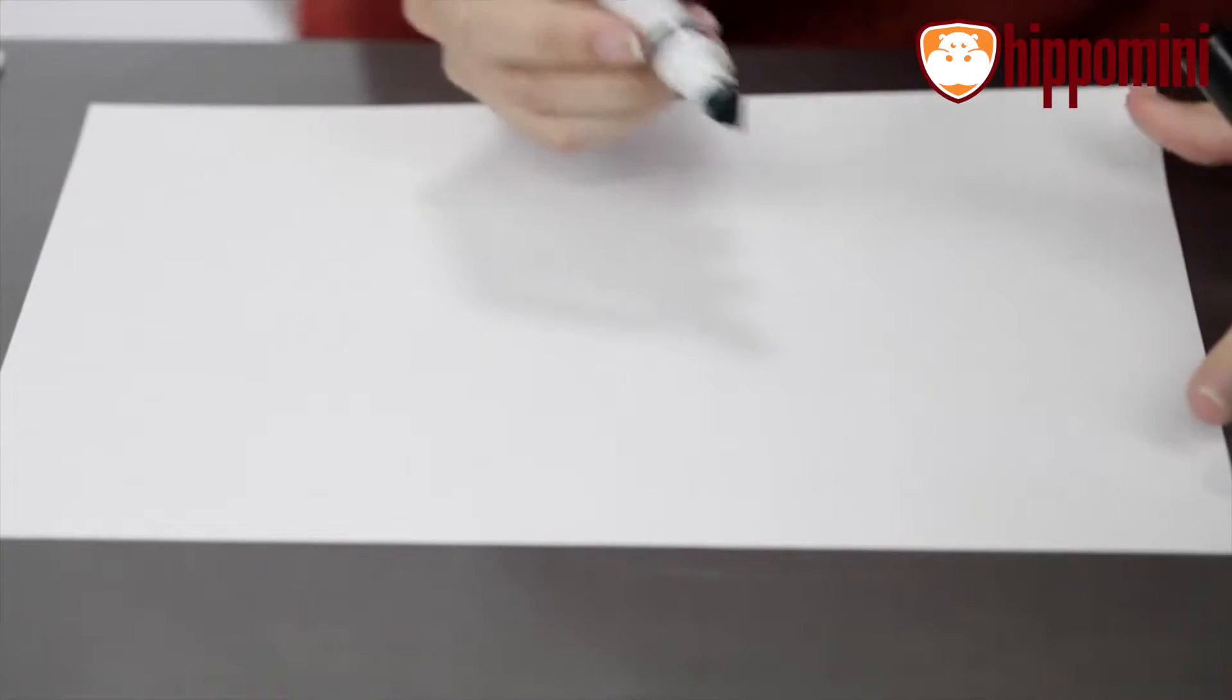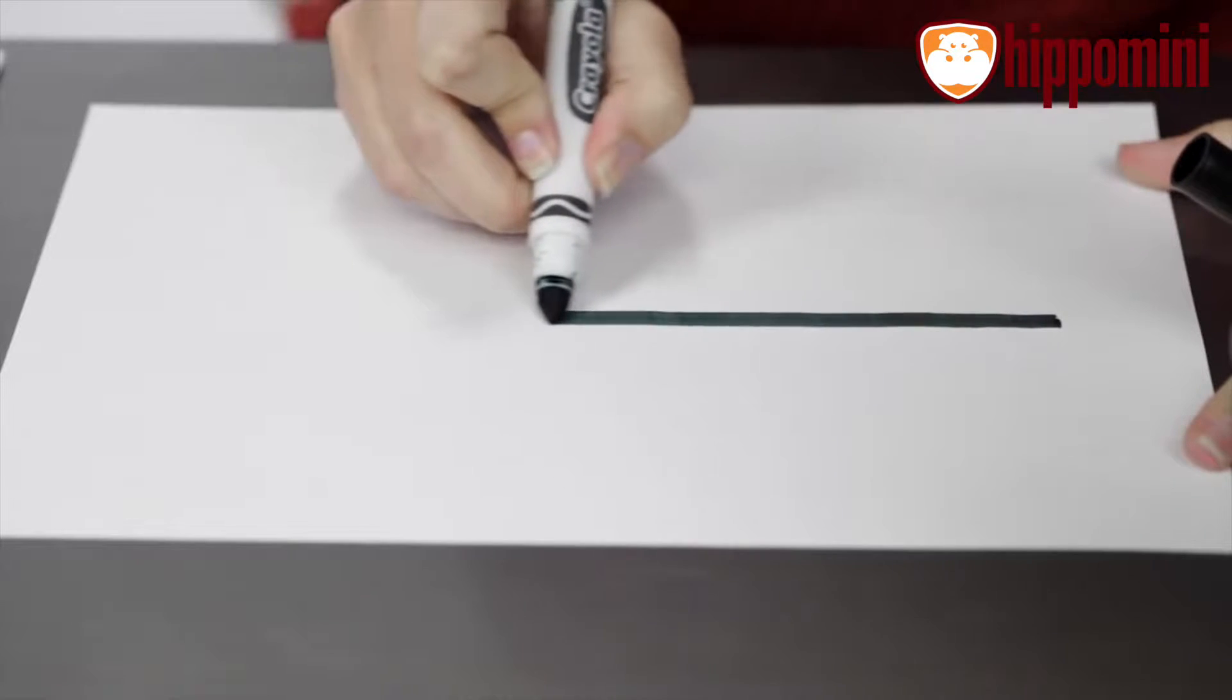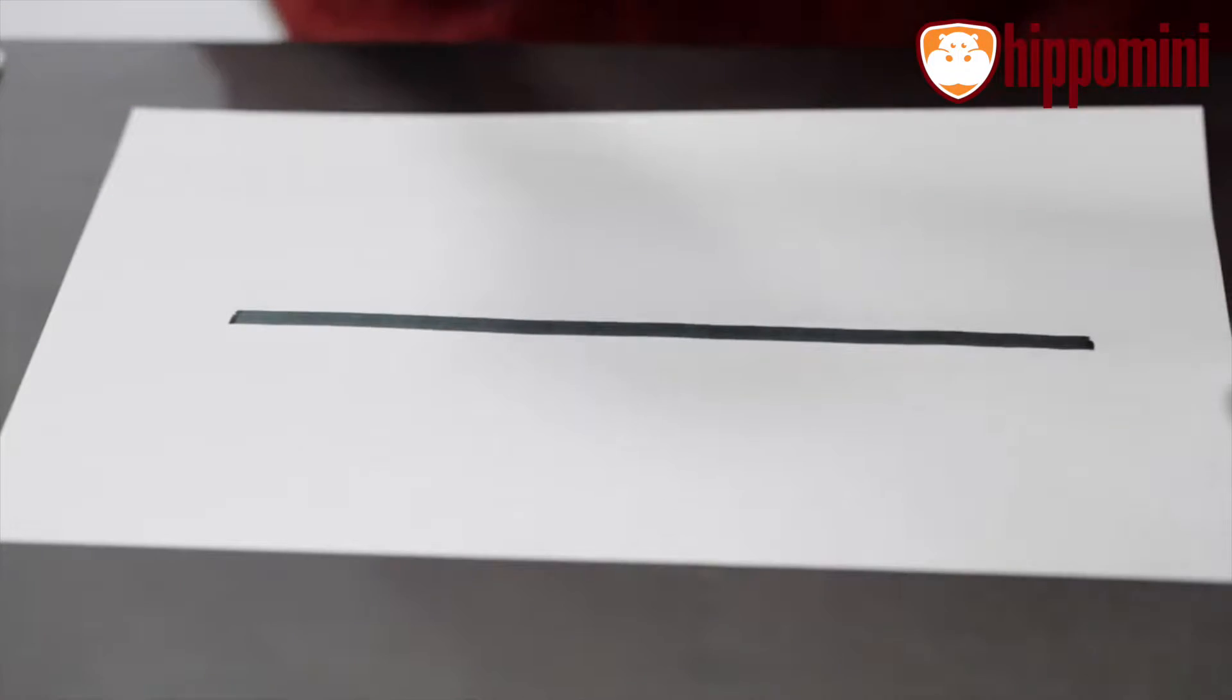The first thing you're going to want to do is draw a line on the paper and you want to make sure it's at least five millimeters thick so that Ozobot can recognize it.